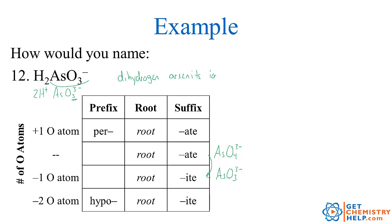And we should write the word ion technically. Well, there you go. I hope you enjoyed that long lesson on polyatomic ions. For much more practice with naming ionic compounds, please come visit me at getchemistryhelp.com. We will see you again next time. Thank you.